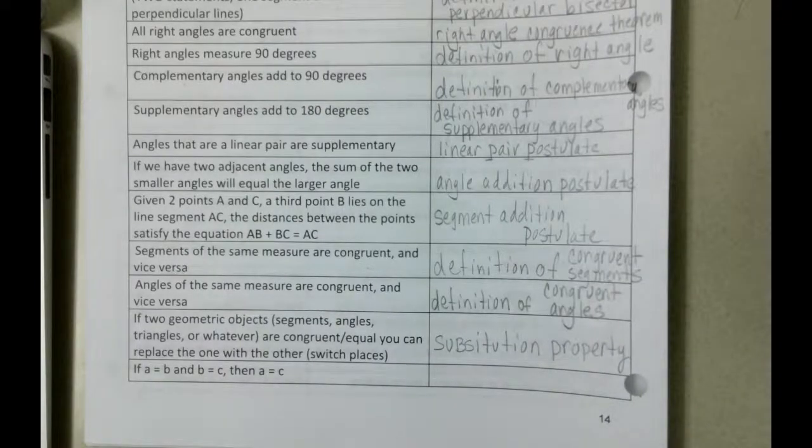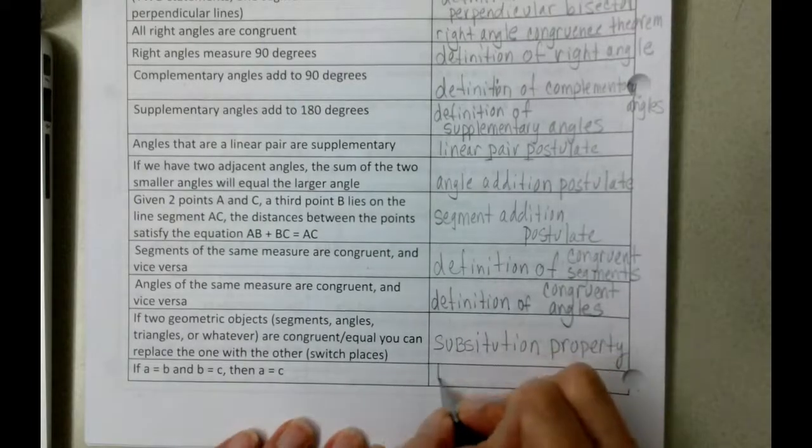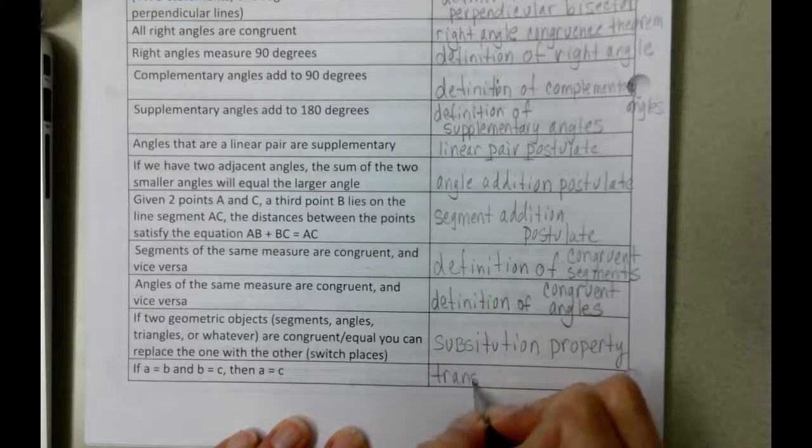And then this last one here, if a equals b and b equals c, then a equals c. This is the transitive property.